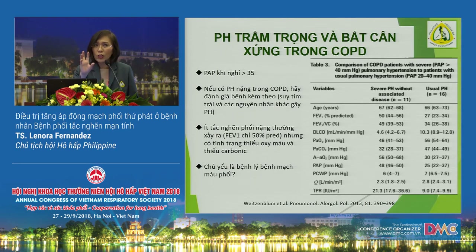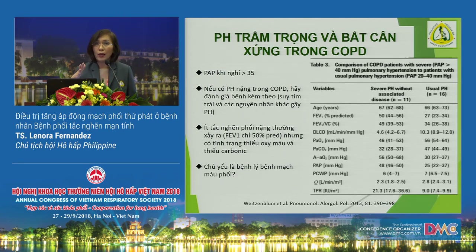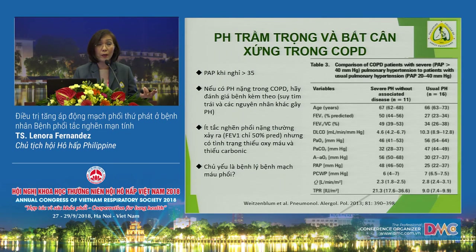Severe pulmonary hypertension is 35 and above, portending a poorer prognosis. The term 'out-of-proportion pulmonary hypertension in COPD' is notable: their lung function is actually better than those with mild pulmonary hypertension, and some have lower CO2 levels. Some are theorizing this might be a different phenotype — perhaps a mix between group 1 pulmonary arterial hypertension and COPD in one patient.